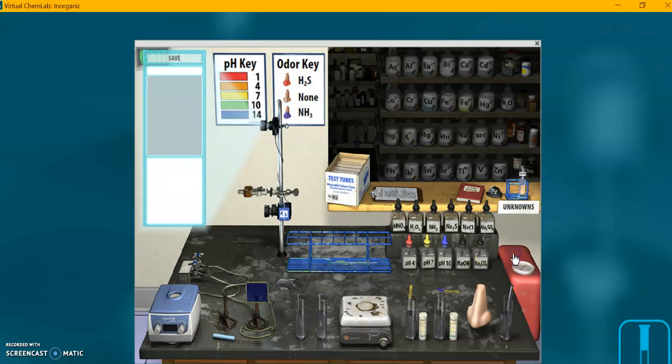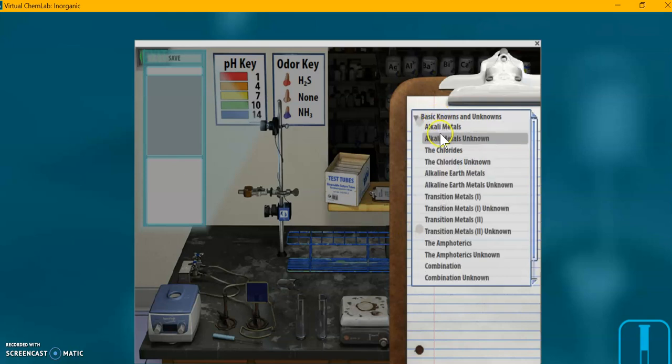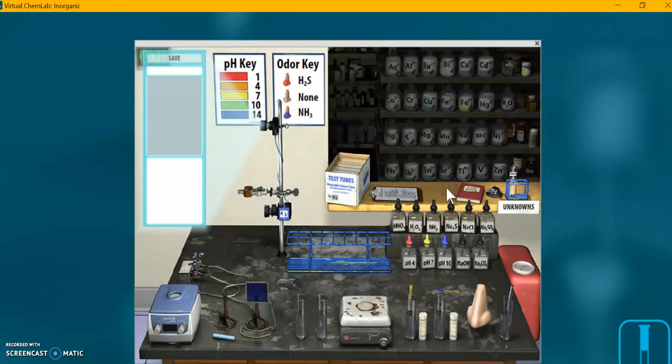I'm going to clear the lab, click on the clipboard, go to basic knowns and unknowns, and alkaline earth metal unknowns. Do your real unknown just like you did your practice unknown. And don't forget to record your unknown number in the close-up window. And that's it. Okay. So here we are.